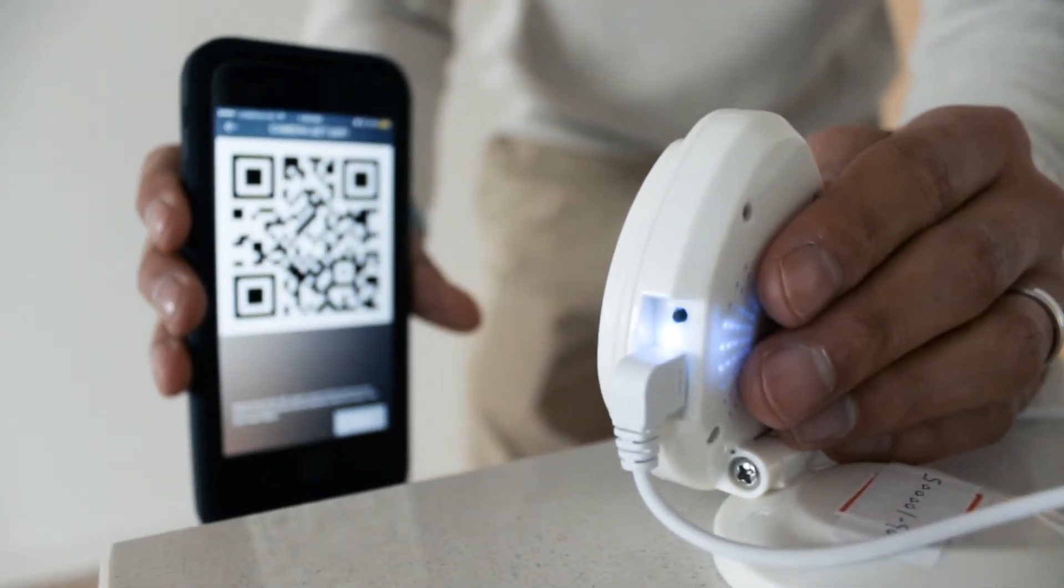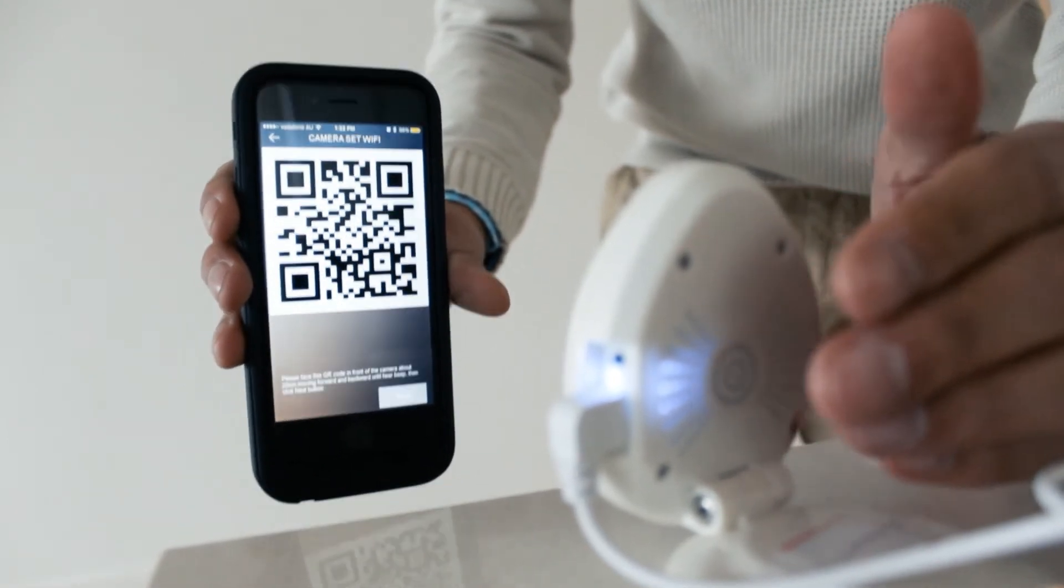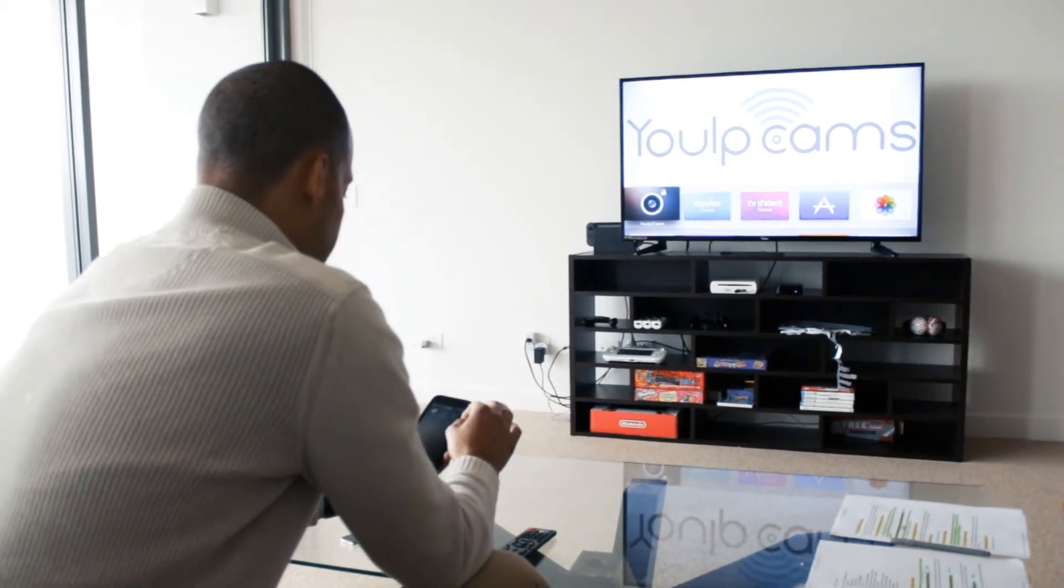If you currently own home security cameras already but want them to be secured with E2EE, all you have to do is simply hook them up to our app, where it will act as a hub to protect all your devices.